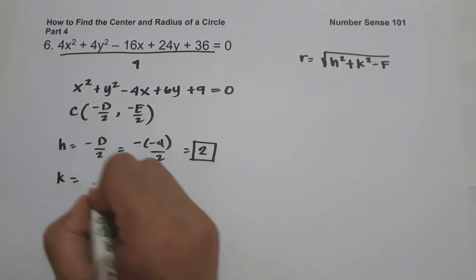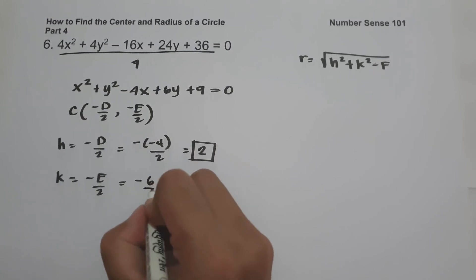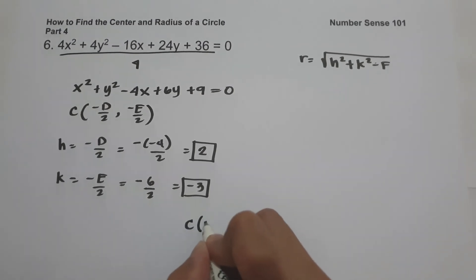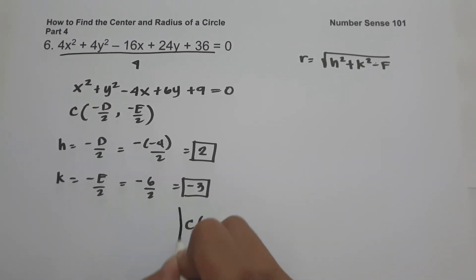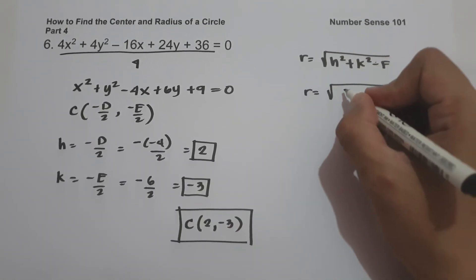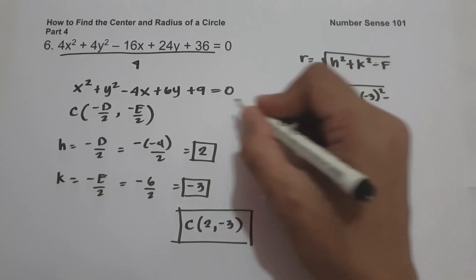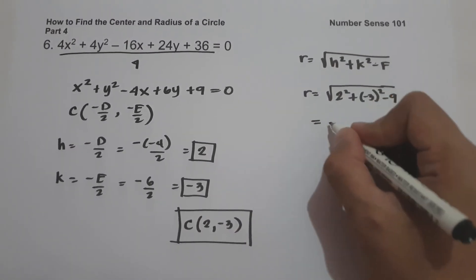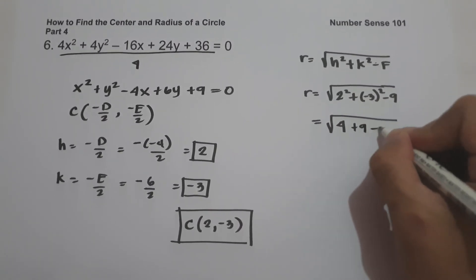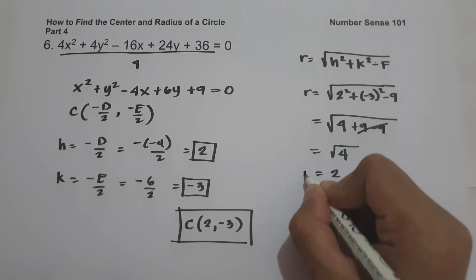For k: negative e over 2, where e is 6, so this is negative 6 divided by 2, which is negative 3. Therefore our center is (2, negative 3). For the radius: square root of h squared plus k squared minus f, which is square root of 2 squared plus (negative 3) squared minus 9. This gives square root of 4 plus 9 minus 9, and the 9s cancel, leaving square root of 4, which is 2. So the radius is 2.